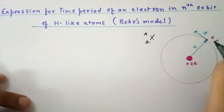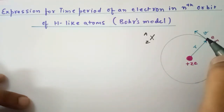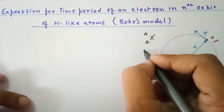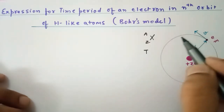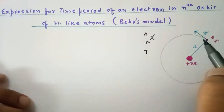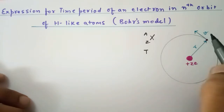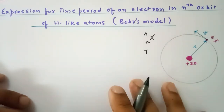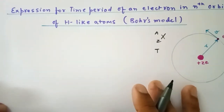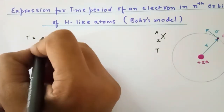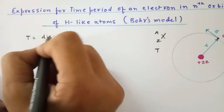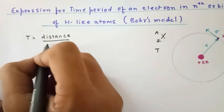So if this electron finishes one full complete revolution, suppose the time taken is capital T — that is what is called time period. Time period is the time taken by an electron to complete one full revolution, and that too with a constant speed V, because we already derived it. So this time period can be written as time period is equal to distance upon speed.